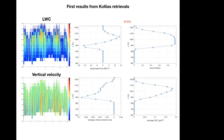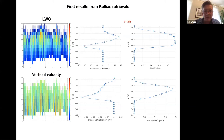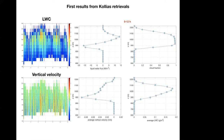First results using retrievals from Pavlos Kolias show 12 hours of data every 10 seconds, with derived quantities including cloud fraction, average liquid water content, and liquid water flux. The liquid water flux is expected to be positive everywhere in the cloud, but is negative in the lower part because vertical velocity is sensitive to the separation between drizzle and cloud droplets — a few drizzle droplets in the lower cloud can contaminate the vertical velocity.